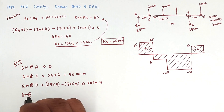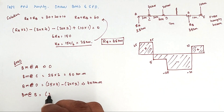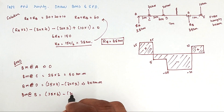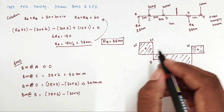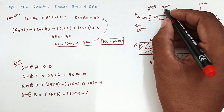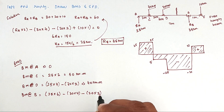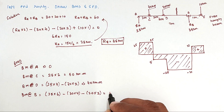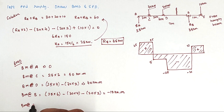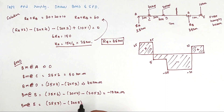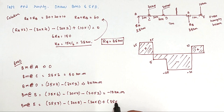Bending moment at B: 25 × 6 − 30 × 4 − 20 × 2 = 150 − 120 − 40 = −10 kNm. Bending moment at E (the free end at 7 m): 25 × 7 − 30 × 5 − 20 × 3 + 35 × 1 = 175 − 150 − 60 + 35 = 0. This confirms our calculation is correct.